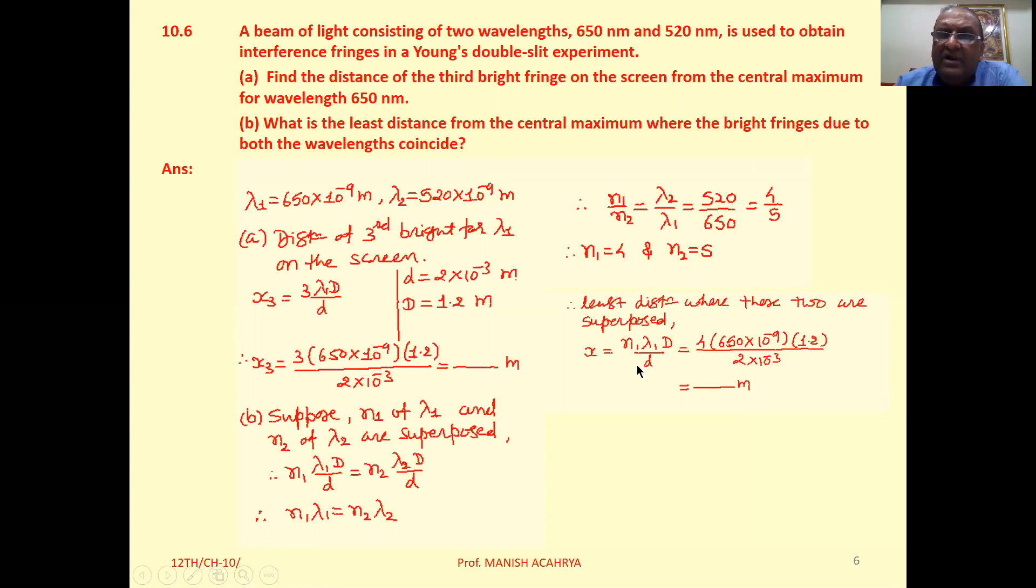Now that particular least distance where these two superpose, we can use either of these two: x equals n₁ lambda 1 D by d. n₁ is 4, lambda 1 is 650 into 10 raise to minus 9, capital D is 1.2, and small d is 2 into 10 raise to minus 3. Then solve this one. You will get that least distance where these two are superposing. Clear?